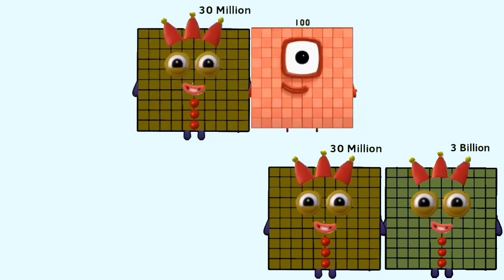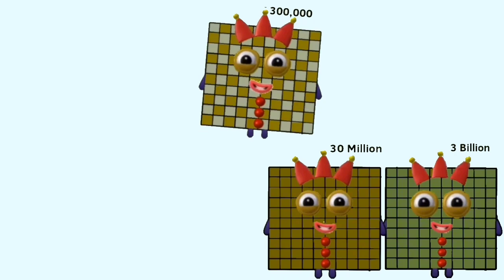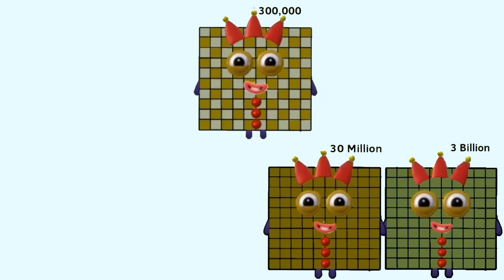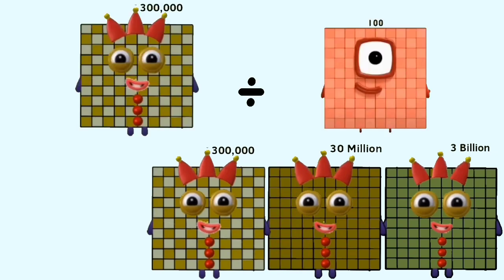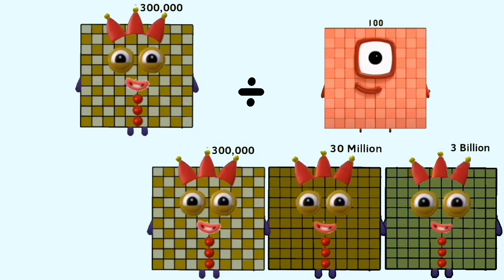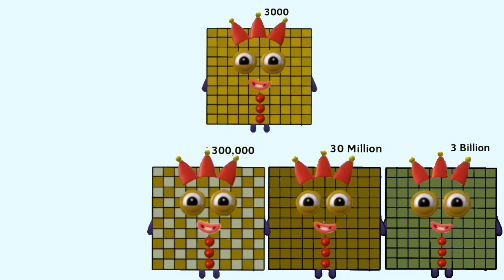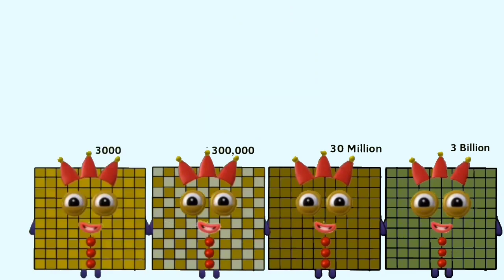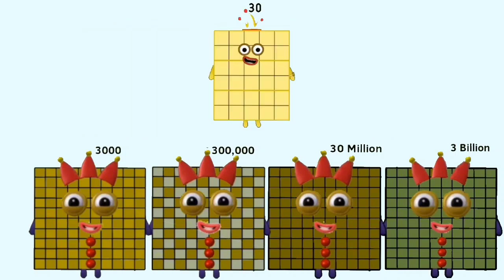Thirty million divided by one hundred equals three hundred thousand. Three hundred thousand divided by one hundred equals three thousand. Three thousand divided by one hundred equals 30.